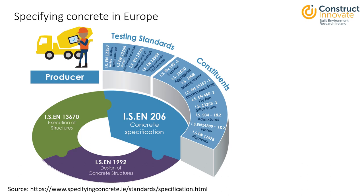Specifying concrete in Europe requires following the European EN standards. The standard for concrete specification in particular is EN 206, which has a suite of standards related to it, including testing standards and constituent standards. IS EN 206 is the Irish standard equivalent for the European Norm 206, which applies to concrete for structures that are cast in situ, precast structures, and precast products for buildings and civil engineering structures. The standards are applicable to concrete produced in a ready-mix plant, for precast concrete products, or for concrete mixed on site.